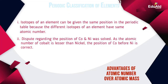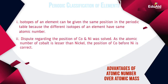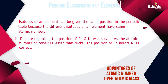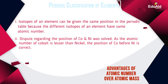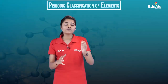The advantage of using atomic numbers over atomic mass: isotopes of an element can be given the same position, because isotopes have the same atomic number but different atomic masses, and since we are arranging elements by atomic number, isotopes can occupy the same position in the modern periodic table. Also, the dispute regarding the placement of cobalt before nickel was solved — the atomic number of cobalt is less than that of nickel, so even though cobalt has a greater atomic mass, it is correctly placed before nickel, exactly as Mendeleev had placed it.